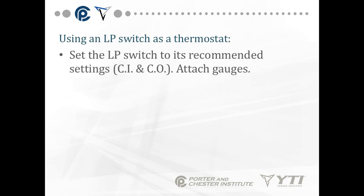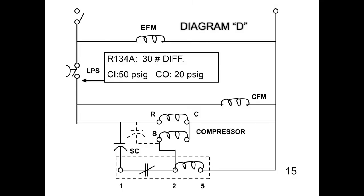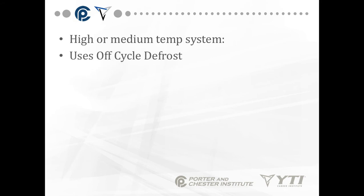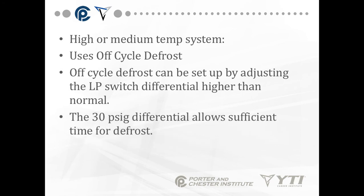To use a low pressure switch as a thermostat, set the LP switch to its recommended settings, cut in and cut out. Attach your gauges. Place a thermometer in the box and close the door. When the box reaches the desired temperature, set the cut out of the LP switch to the low pressure side shown on the gauges. So if I want my box temp to open at 20 psi, I also have to set a 30 pound differential. So my cut in will be 50 psi. Higher medium temperature systems use an off-cycle defrost. Off-cycle defrost can be set up by adjusting the LP switch differential higher than normal. The 30 psi differential allows sufficient time for defrost. In other words, all we do is shut the compressor off for defrost. We keep the evaporator fan running.